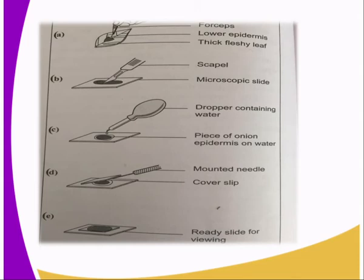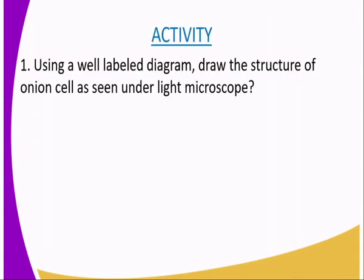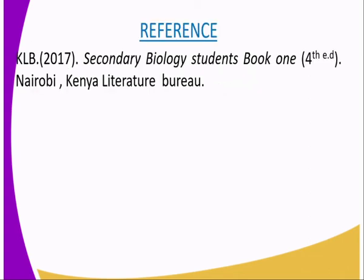As an activity, using your labeled diagram, draw the structure of the onion cell as seen under the light microscope — just draw the structure of the onion cell as you have just seen using the light microscope. Remember there are two types of microscopes: the light and the electron. In this case we need the structure as seen under the light microscope.